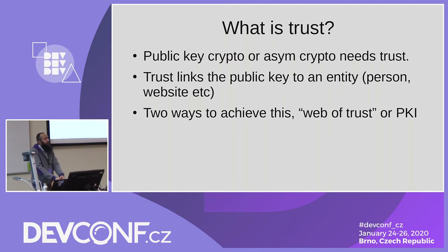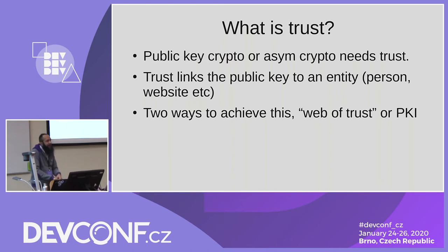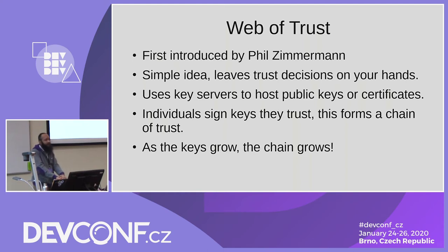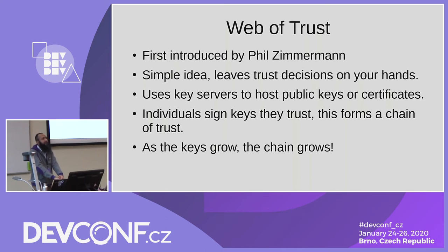The second part of the problem is solved by using something called PKI, which is public key infrastructure, including certificate authorities and sub-certificate authorities. We are going to look briefly at both of them and see why both methods are flawed. The web of trust was first introduced by Phil Zimmerman around 1992. The idea says that we have a central place where everybody's public key is stored, which is basically known as a key server.